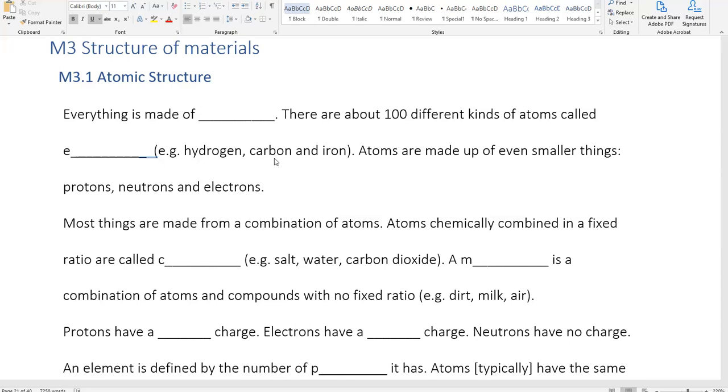We're going through the filling in the blanks for the booklet. So the first thing is that everything is made of atoms. There are about 100 different kinds of atoms called elements, hydrogen, carbon, and iron.